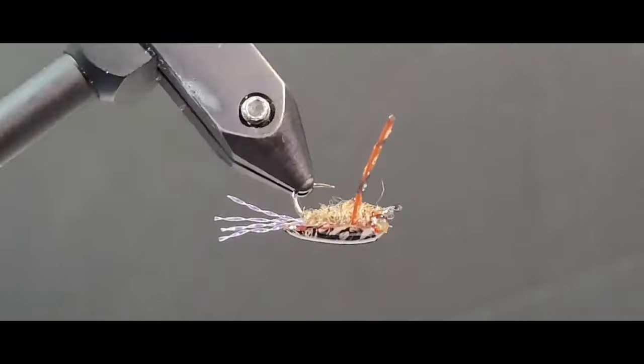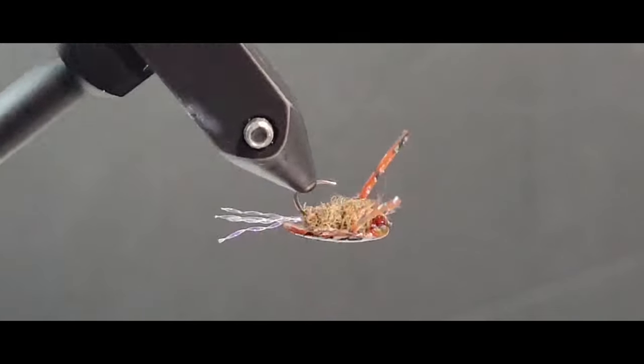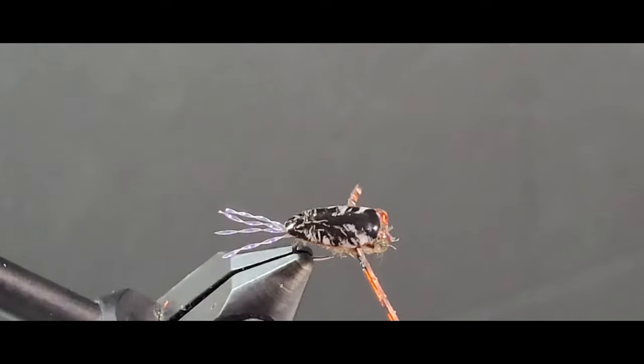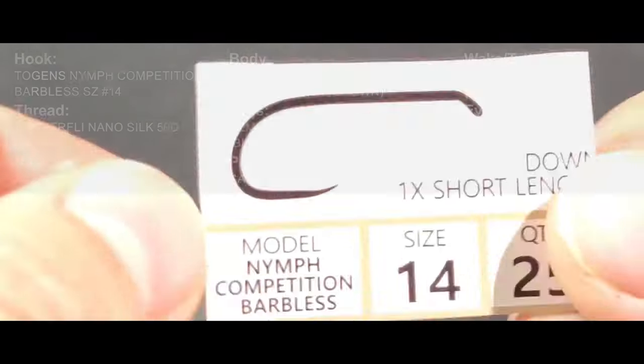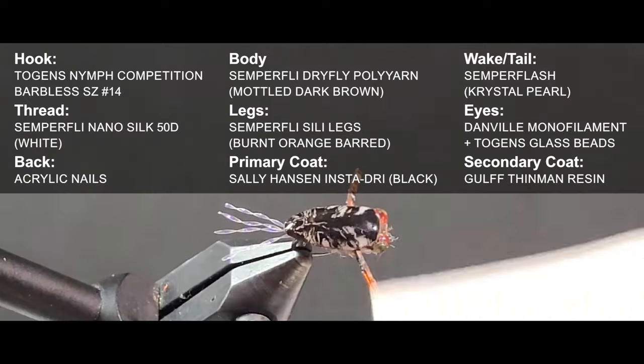Hey guys, thanks for joining me. In today's video I'm going to be showcasing a little back swimmer pattern that I call the Beauty Salon Back Swimmer. For my hooks I'm using Togens Nymph Competition barbless hook in size 14.